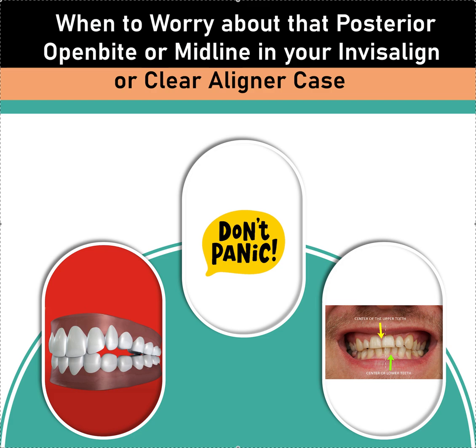We can always double-track the midline at the refinement stage. The main midline I want to know is the upper midline — the lower one I can always move around if I need to later. The upper one is kind of important, so let's find out where that is and get that set at the beginning on the ClinCheck or the ClearPilot setup.